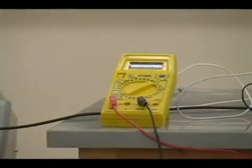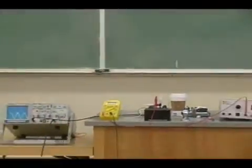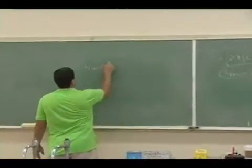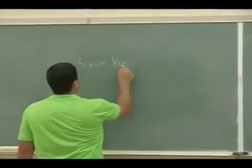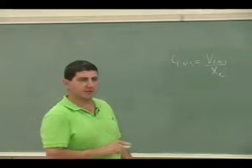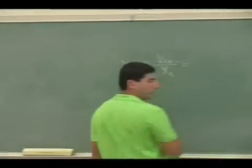Okay. How much current should it read? V_rms over X_C, right? And then X_C is 1 over 2πfC. So it's basically 2πfC times V_rms.